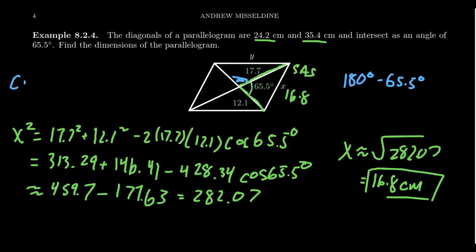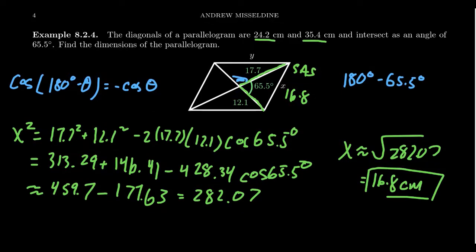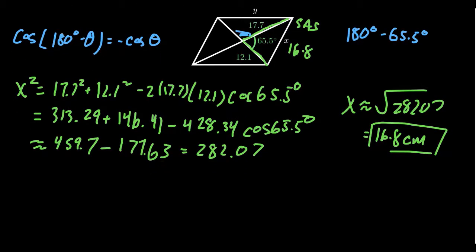Because if you take cosine of 180 degrees minus theta, that is, if you take the supplement, that's just equal to negative cosine of theta. So we can actually get away with the 65.5. We're just going to switch the signs.